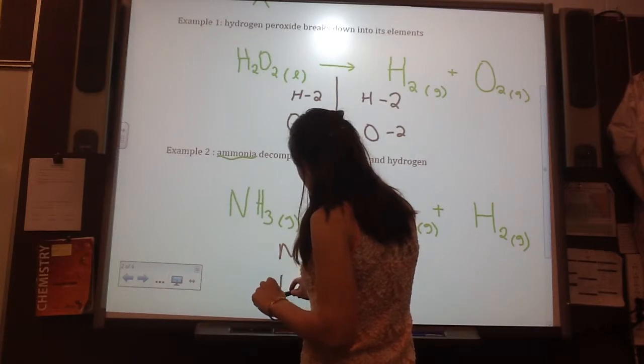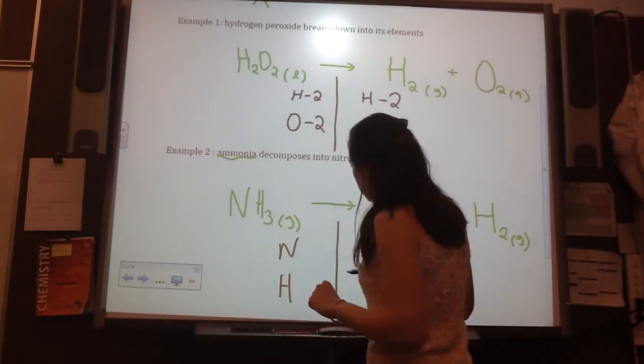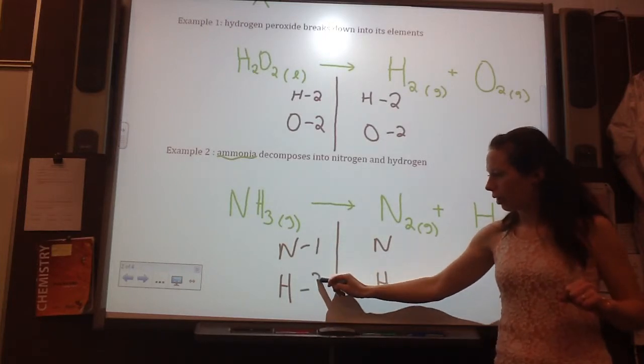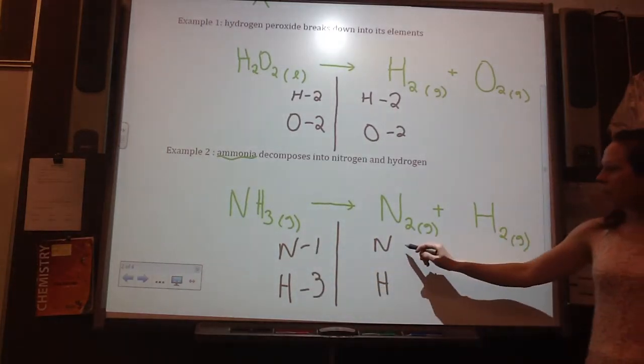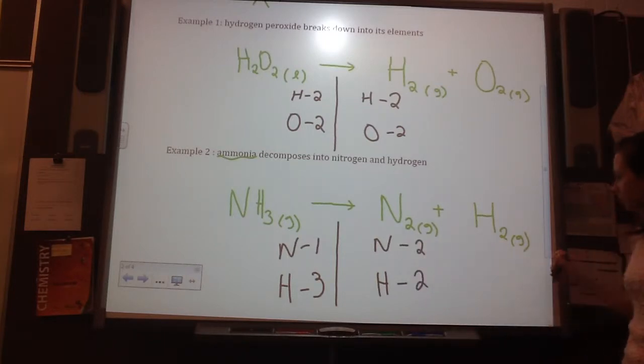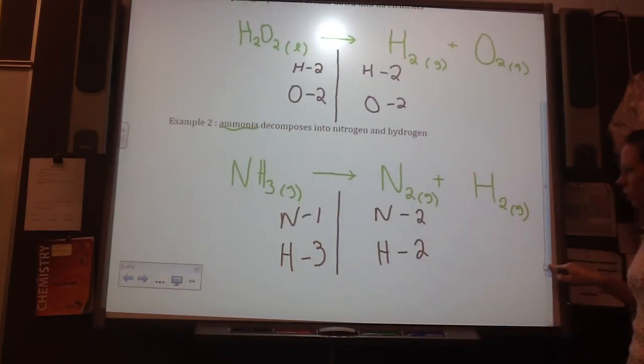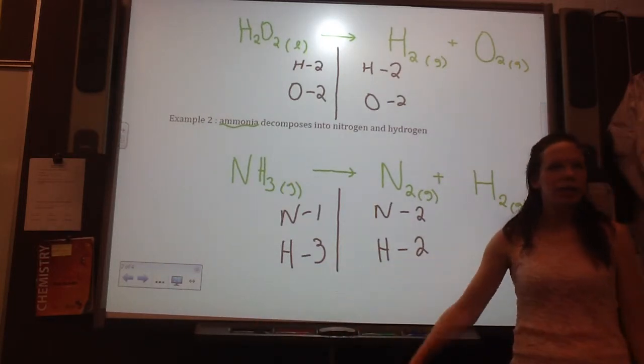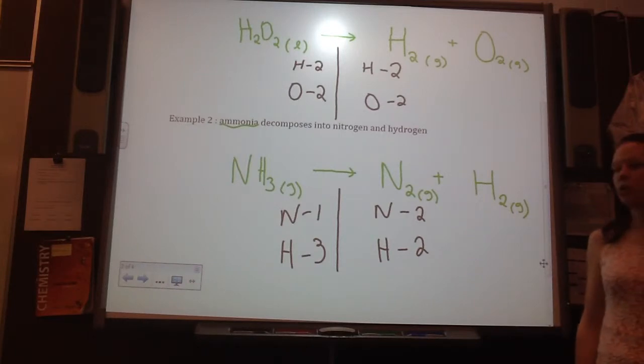So, we have Ns and Hs. On our reactant side, we have one N and three Hs. On our product side, we have two Ns and two Hs. So, the more complex one here is our hydrogen. There's three and then two.